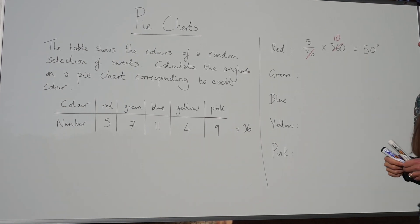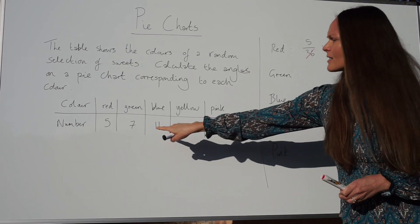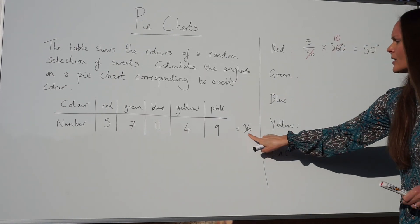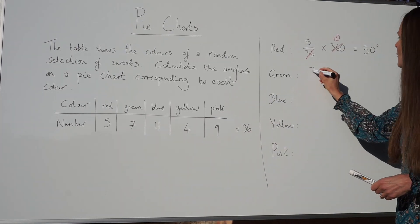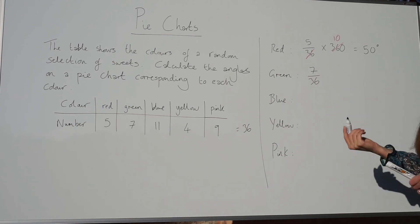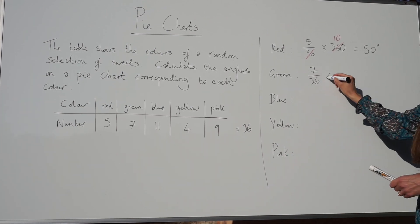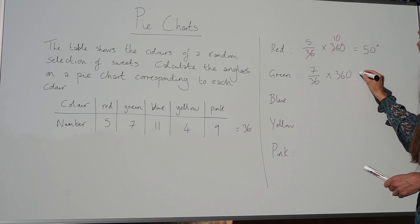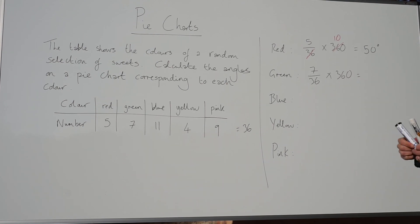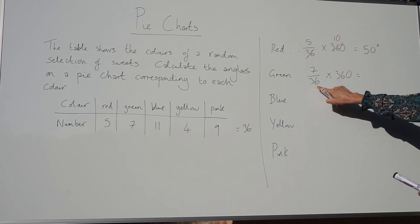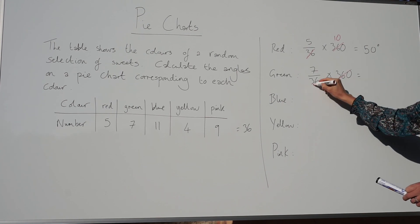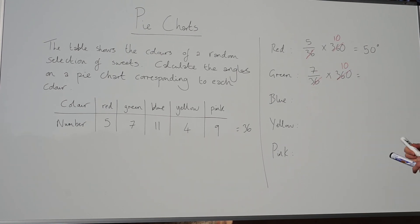Now let's find the fraction of green sweets. There are seven green sweets and a total again of 36, so the fraction is 7 out of 36. And just like before, to turn this into degrees you must multiply by 360. So just like earlier, 360 divided by 36 is 10, so 7 multiplied by 10 is 70. So 70 degrees for the sector showing green sweets.